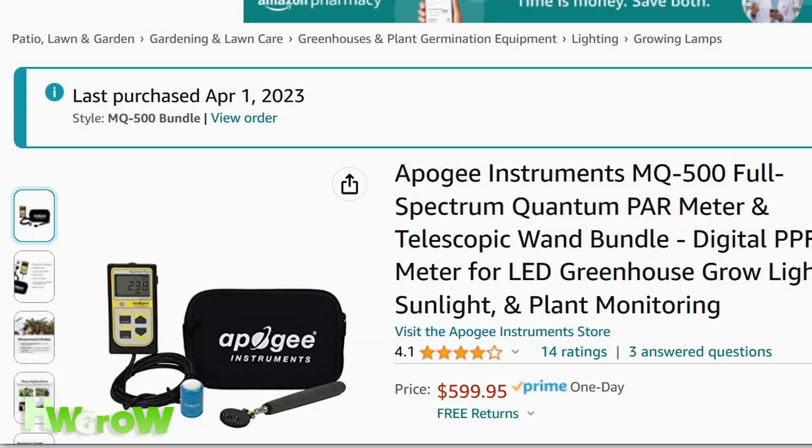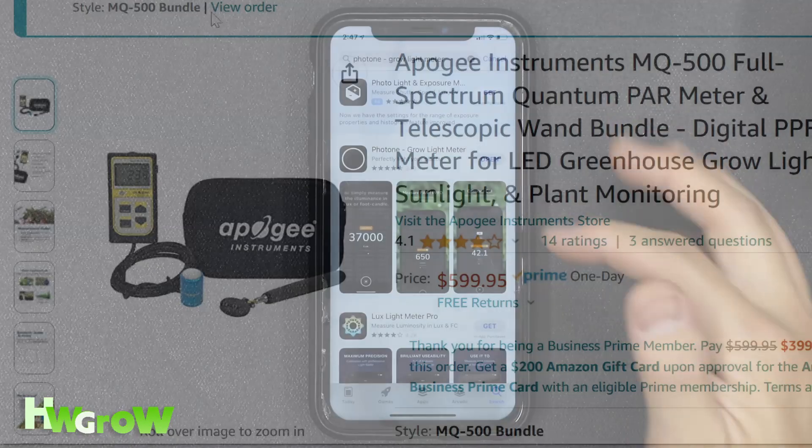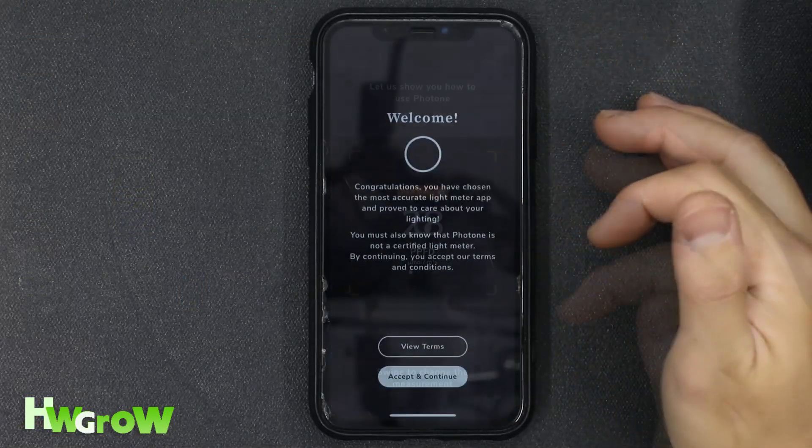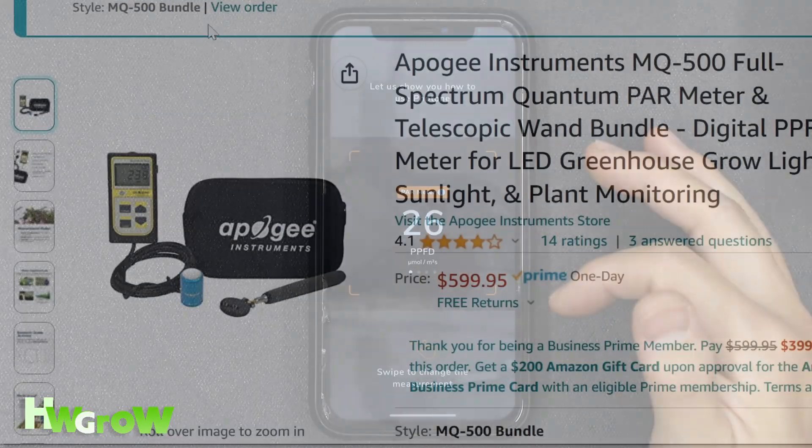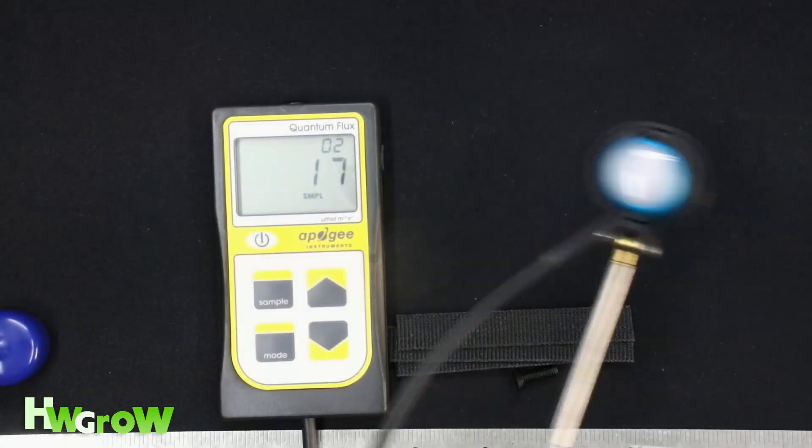Now, for another episode of Wasting Money to Prove a Point, I present to you a $6 light meter app versus a $600 NASA-approved light meter.